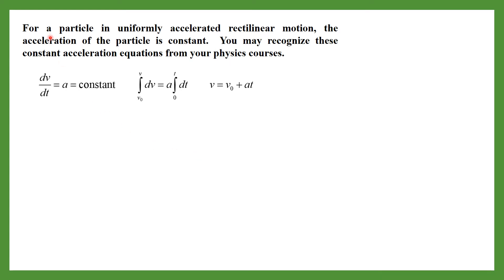For a particle in uniformly accelerated rectilinear motion, the acceleration is constant. We know that acceleration can be written as a = dv/dt. Since a is constant, we can write this as an integral and take a out of the integral. After integration we get v = v₀ + at.